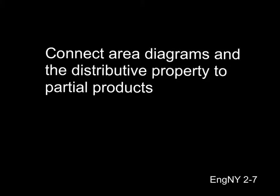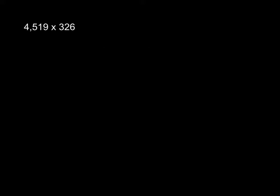This is a quick video about connecting area diagrams and the distributive property to partial products. This is very similar to what we've been talking about the past couple days. Now, we are adding an additional digit. Think about what we've done before. How might this be different, multiplying four digits versus three?